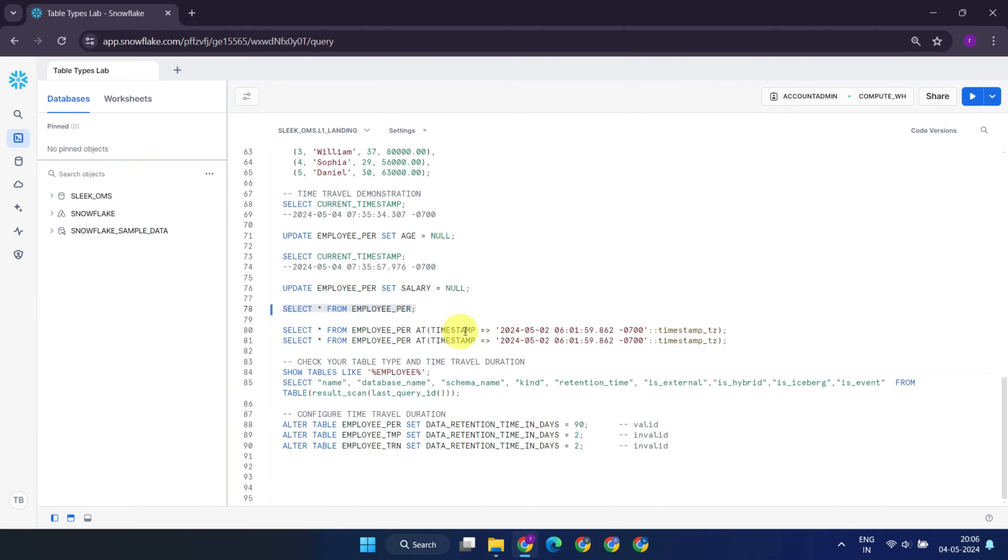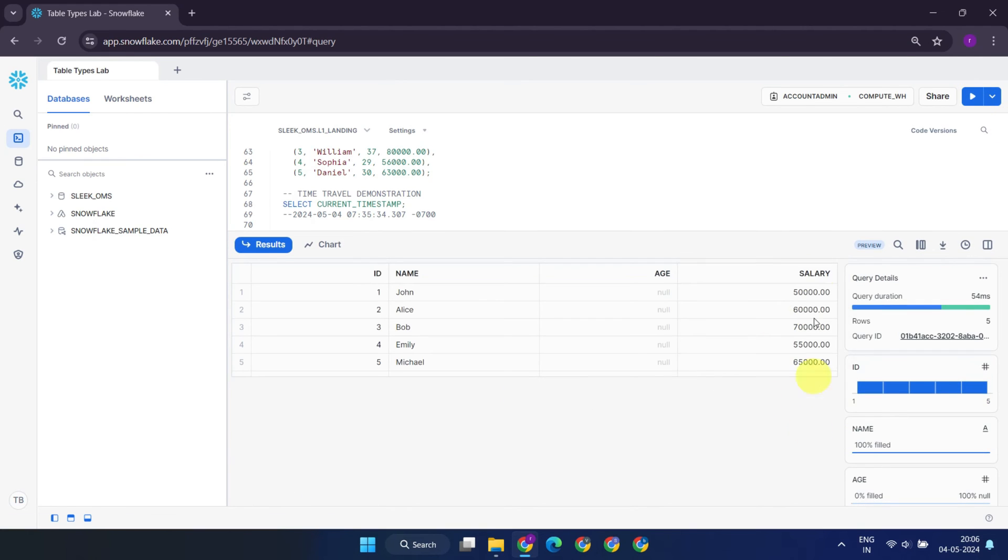However, what if you now realize that the second update is incorrect? In such a scenario, the time travel feature becomes a lifesaver. By simply executing a statement like this one with the desired timestamp, you can recover the table data exactly as it was before the second update.